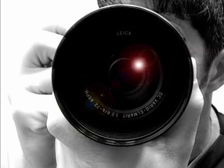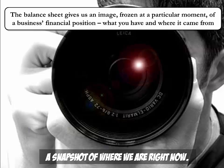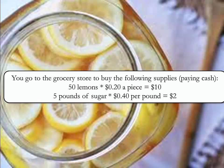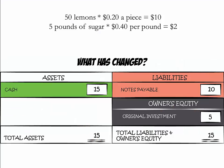When we look at the balance sheet, we see an image of the business's financial position — what the company has and where it came from. You go to the grocery store and buy the following supplies, for which you pay in cash: 50 lemons at 20 cents per lemon, and 5 pounds of sugar at 40 cents per pound. What has changed on our balance sheet? We spent $10 on lemons and $2 on sugar, and we paid in cash, so our cash is down from $15 to $3.